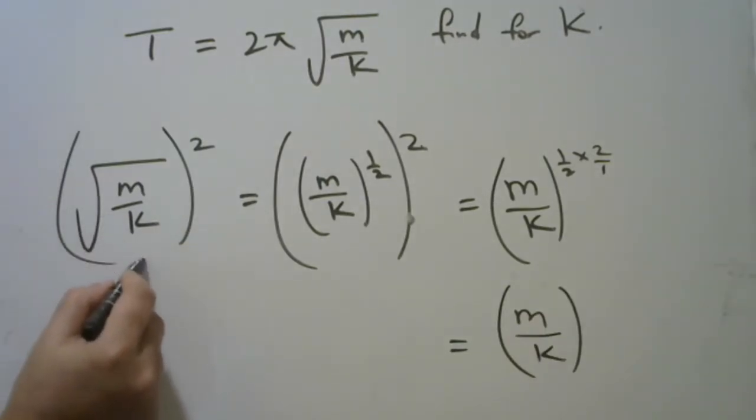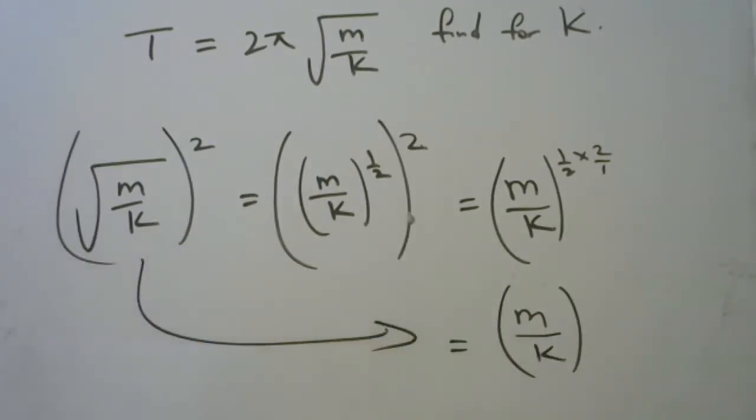So you move from here to here, right? So if you square the square root of something, you get it in this format here.